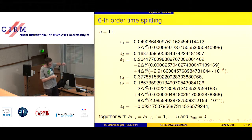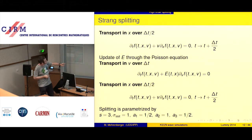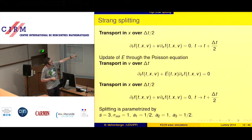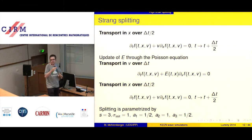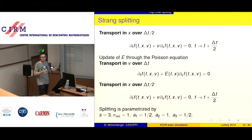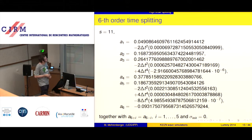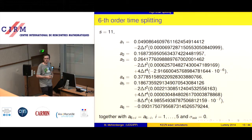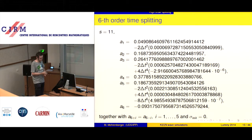For high-order splitting to work effectively, we need to find solutions that reduce the number of stages and keep negative coefficients small. Looking at the sixth-order coefficients, A6 is negative but not too bad. The scheme has about 11 steps: roughly six in x and five in v (or vice versa), compared to just two steps in x and one in v for Strang. The scheme begins with v, so if you begin with x you need different coefficients.